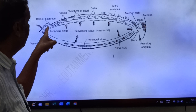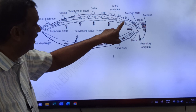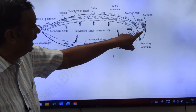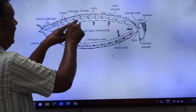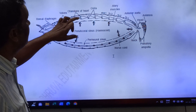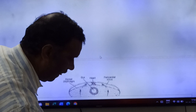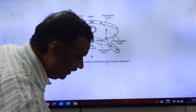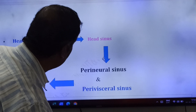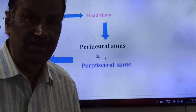The heart has 13 chambers. The first chamber opens into the aorta, which opens into the head sinus. From the head sinus, blood enters into the perivisceral sinus and perineural sinus. When alari muscles contract, blood enters the pericardial sinus; when alari muscles relax, blood enters the heart through ostia. This completes the circulatory system of cockroach — a very important long question. Thank you, good day friends.